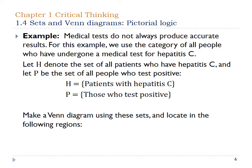Medical tests do not always produce accurate results. In this example we have patients with hepatitis C and patients who test positive. You may have heard of the term false positive — that's when somebody tests positive for an illness even though they really didn't have it. There's also the false negative, which is where people who actually do have the disease test negative for it.